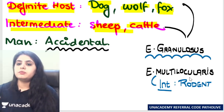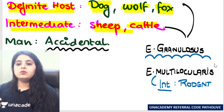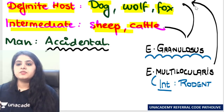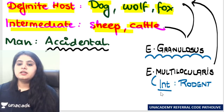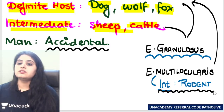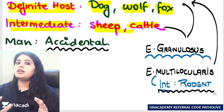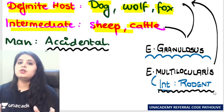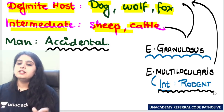There's another very similar one known as Echinococcus multilocularis. In that also the definitive hosts are the same — dog, wolf, fox — but the intermediate hosts are going to be rodents. That's how the life cycle is different; otherwise everything looks the same.